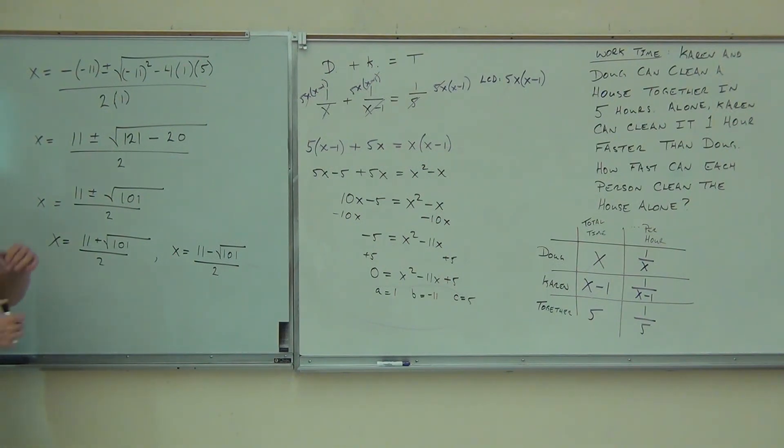Actually, no, that'll be fine, I'll show you why. First thing, we're going to go ahead and find our x's. You take 11 plus square root of 101 over 2, you take 11 minus square root of 101 over 2.